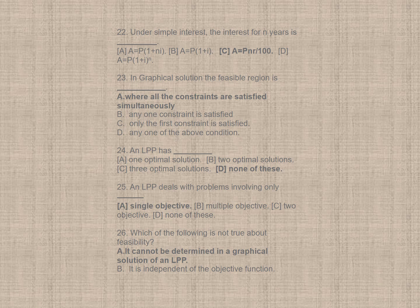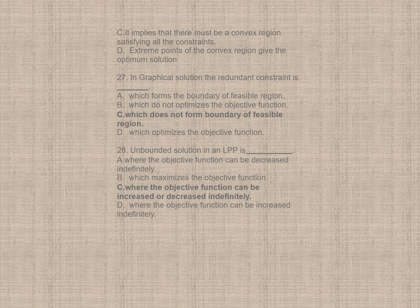Question 25. An LPP deals with problems involving only, a single objective. Question 26. Which of the following is not true about feasibility? A. It cannot be determined in a graphical solution of an LPP. Question 27. In graphical solution, the redundant constraint is, correct option is C, which does not form boundary of feasible region.